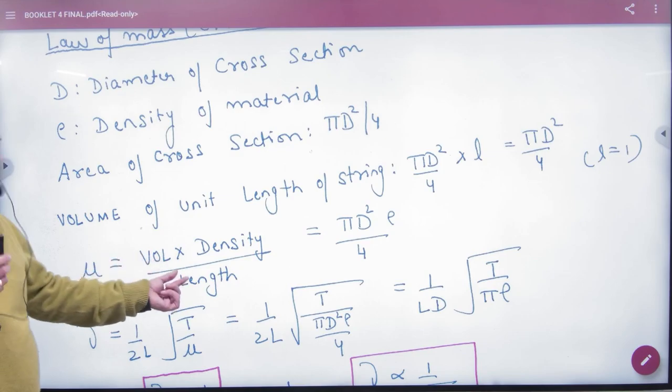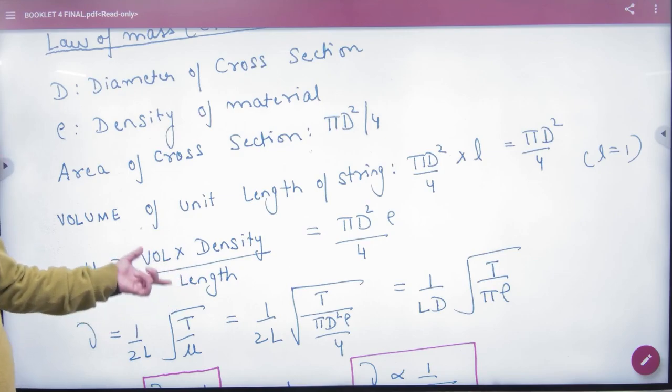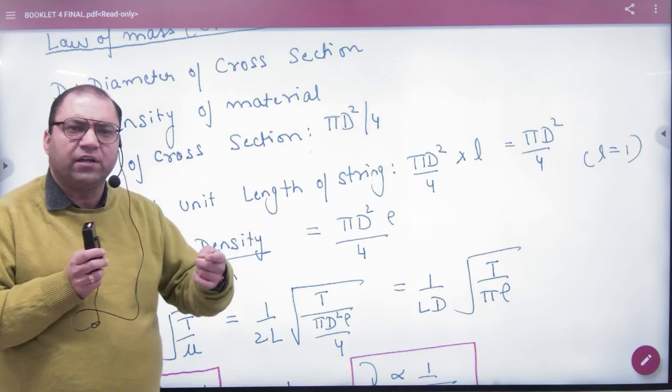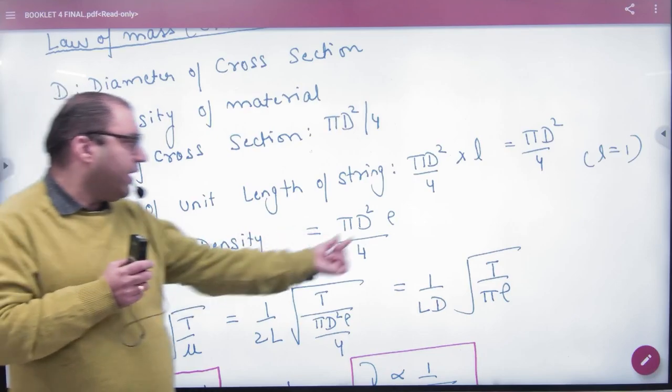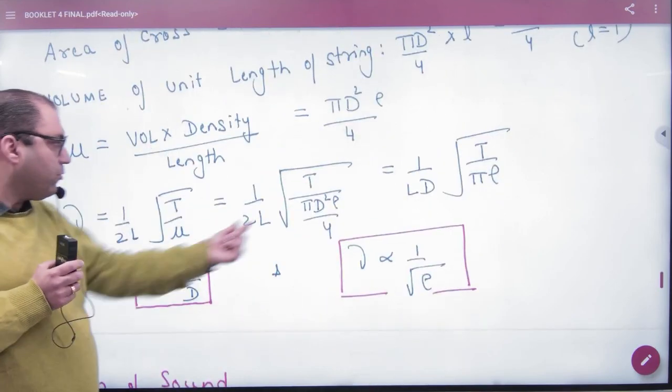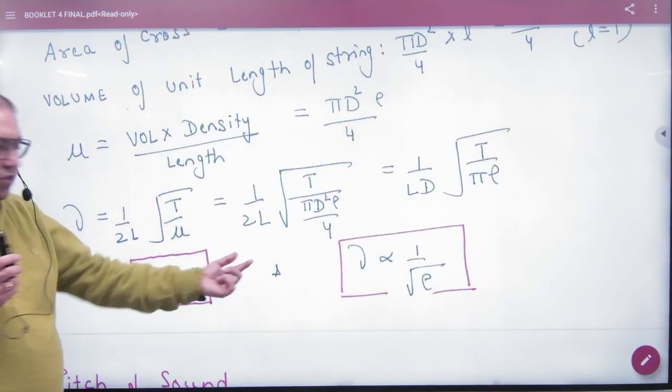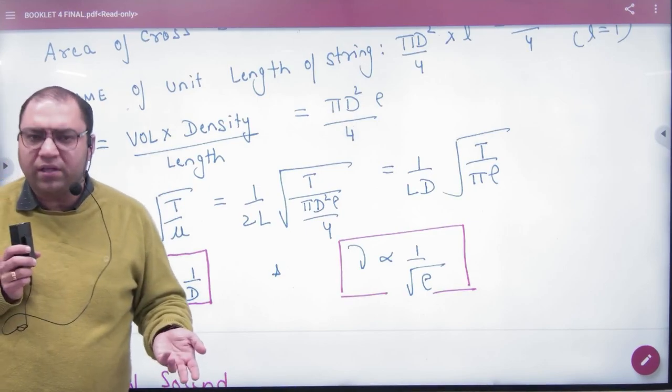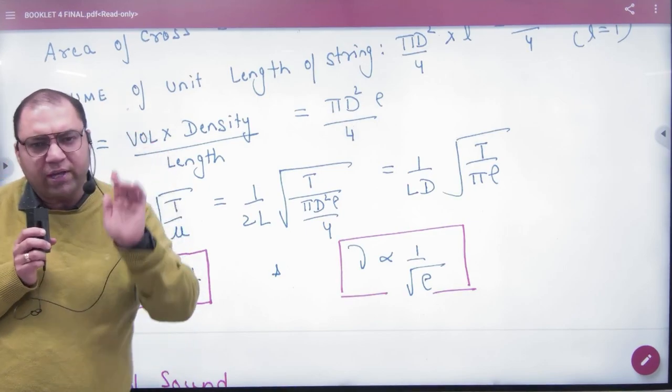Area of cross section: we will write mass per unit length as area into density, area into diameter formula into density, and we will write this as mu. So you will have such relations. These laws we have already done numerically.